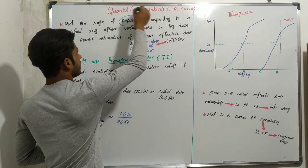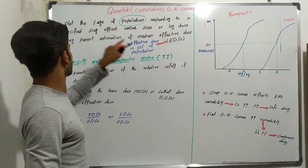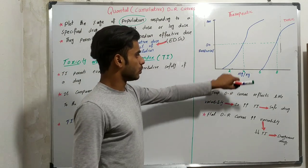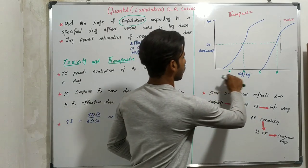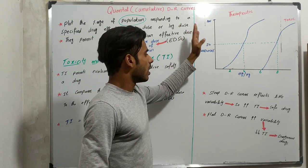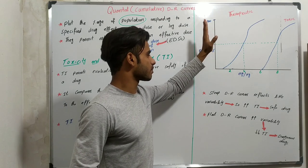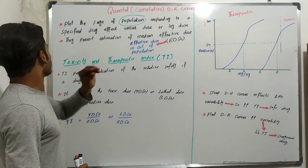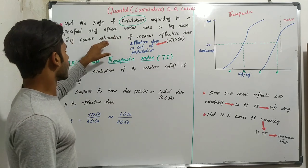In these curves, we plot the percentage of population responding to a specified drug effect versus dose or log dose. We take the dose or log dose of our drug on the x-axis, and on the y-axis we see how the population responds to that dose of a drug — the percentage response of the population to that drug.